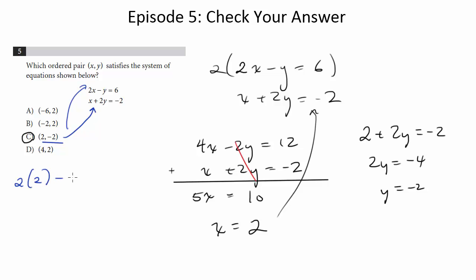So 2 times 2 minus negative 2 hopefully equals 6. 4 minus negative 2 is plus 2. And of course, 6 equals 6. So it checks out. So at this point, we are as close to certain as we can be that we've gotten this question right.